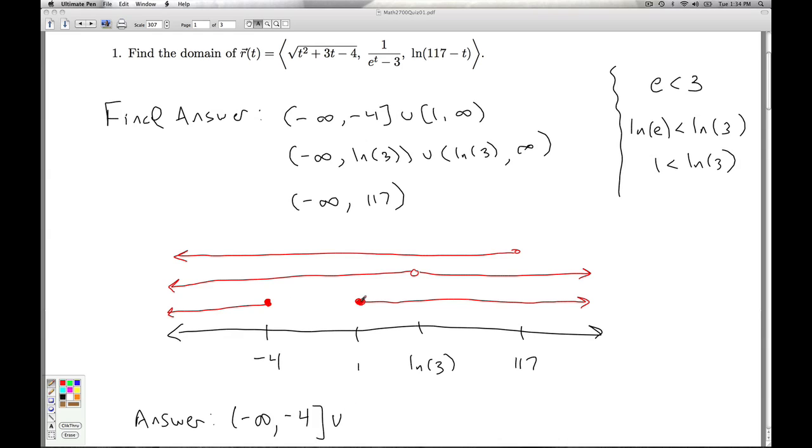Then, I have to skip up to 1. And then, from 1 to the natural log of 3, I have all three domains represented here. So, I'm going to go from 1, including 1, to the natural log of 3, and parentheses, because I have to skip over the natural log of 3. And then, I have all three domains represented up to, but not including, 117. So, we'll use parentheses there.